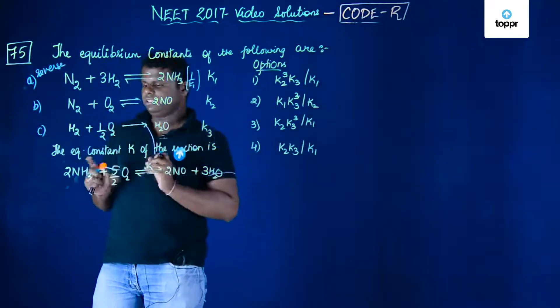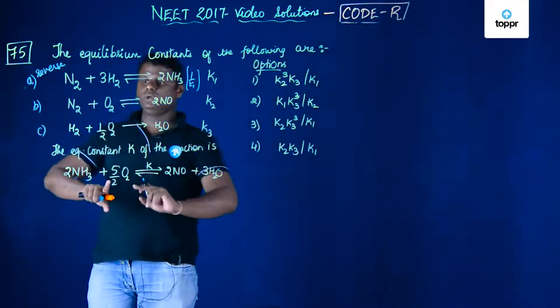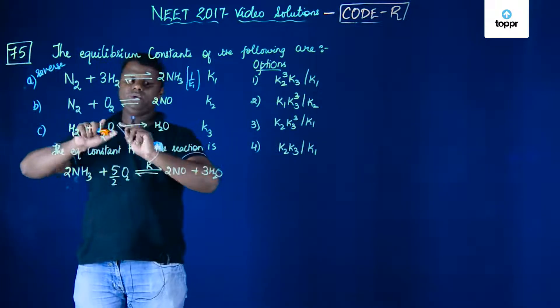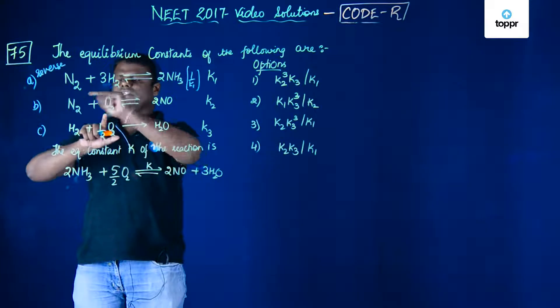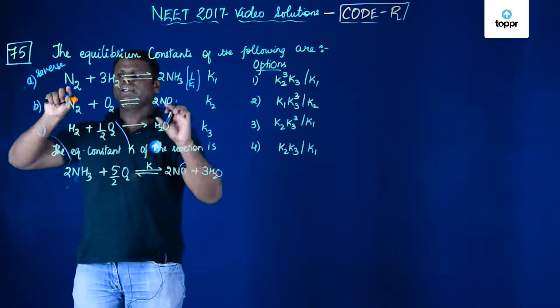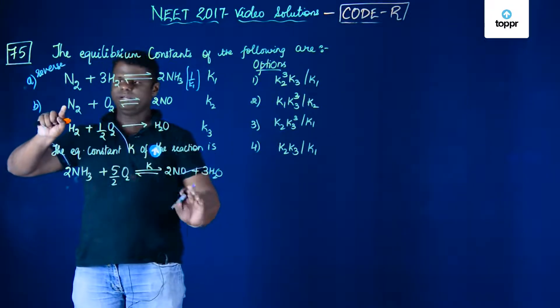Next is 5/2 O2. O2 is appearing here, and there is no N2 appearing. That means you cannot change this because once you change this, the N2 will get imbalanced. So you are supposed to keep this as it is because there is no N2 appearing.